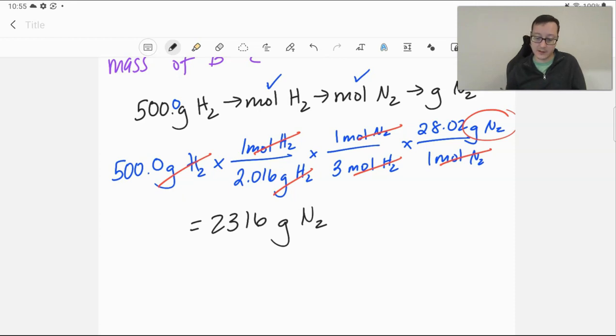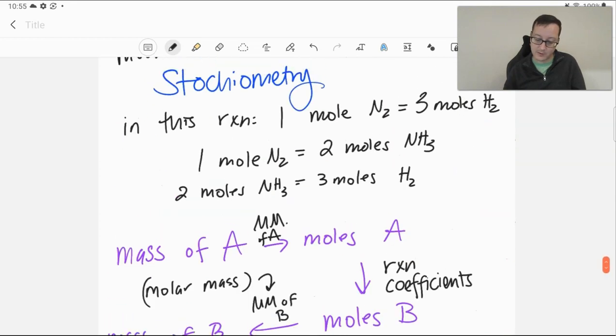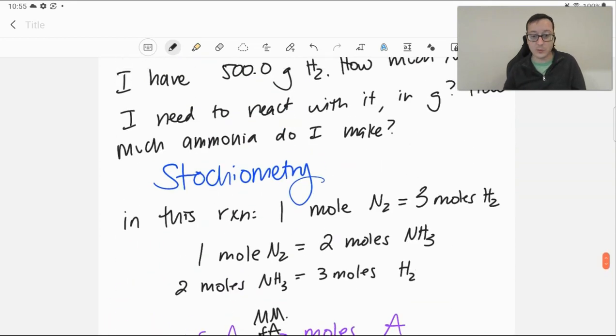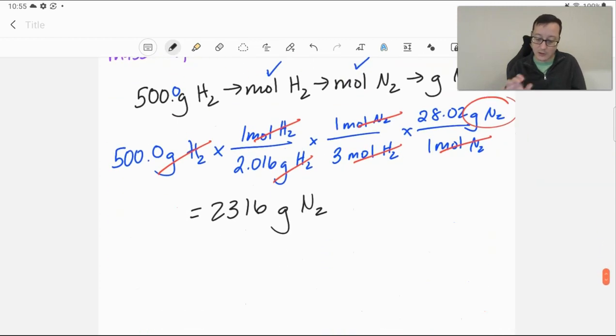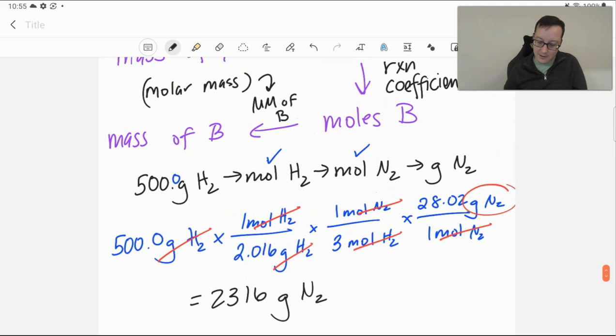And now, if we wanted to ask ourselves, how much ammonia would we produce? That's the second part of this question. We can do that as well. We can use either the hydrogen or nitrogen to figure this out. Generally speaking, it is better to do the one you know absolutely for sure. We know we have 500 grams of hydrogen. That was given to us in the problem. The 2,316, we also know, but we're not maybe a thousand percent sure. Because maybe we made a calculator mistake. So, it's always better to start with the number you absolutely know for sure. So, the 500. If we want to convert that to ammonia instead, we are going to follow the same pathway. But instead of using nitrogen, we're going to use ammonia.